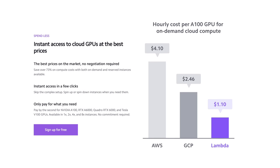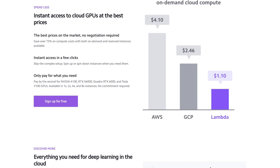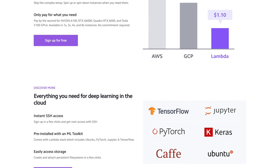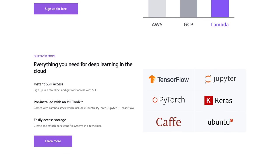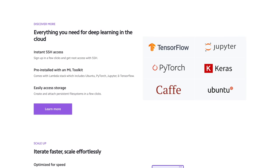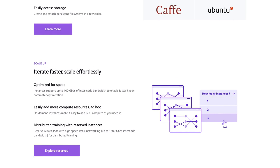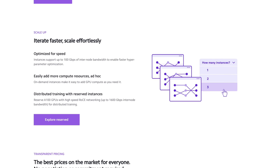And, hold on to your papers, because with Lambda GPU cloud, you can get on-demand A100 instances for $1.10 per hour versus $4.10 per hour with AWS. That's 73% savings! Did I mention they also offer persistent storage?